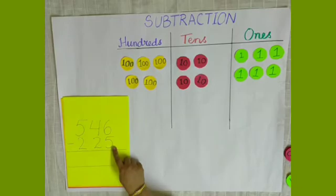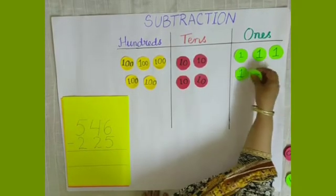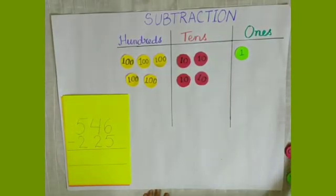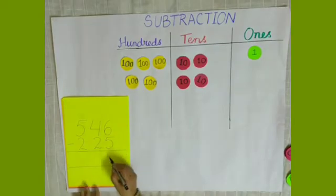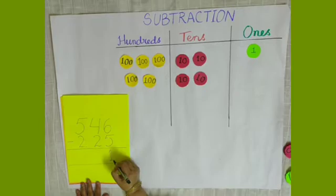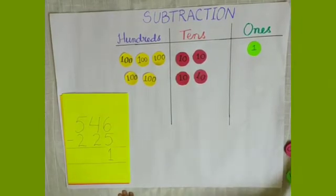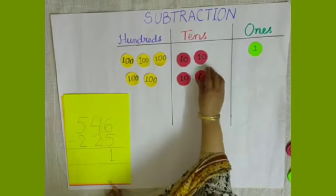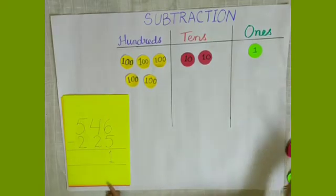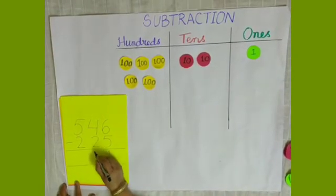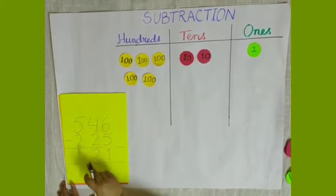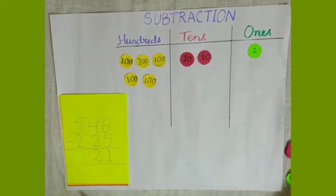We have to take away 5 ones, so we will take away 5 ones from here and we are left with 1 one. In the 10s column we have to take away 2 tens — so we take away 2 tens from 4 tens and we are left with 2 tens.